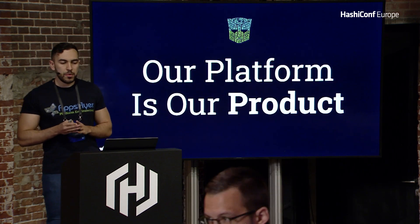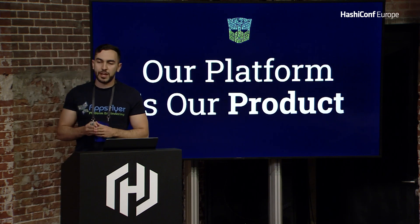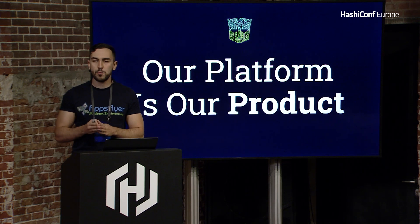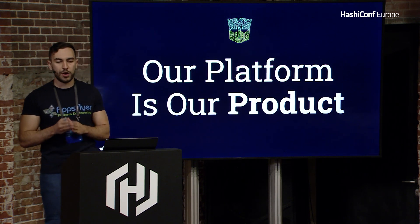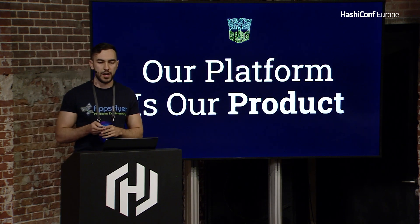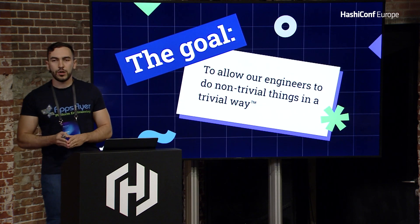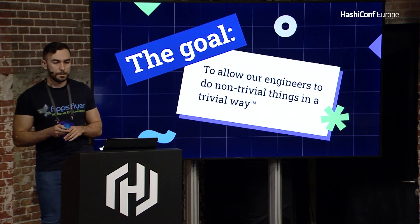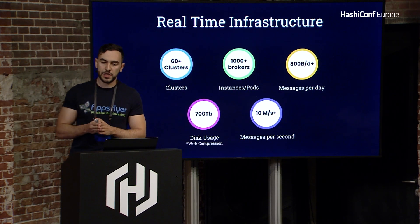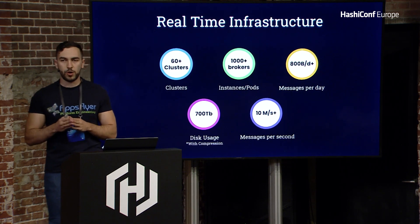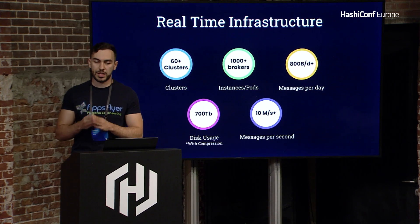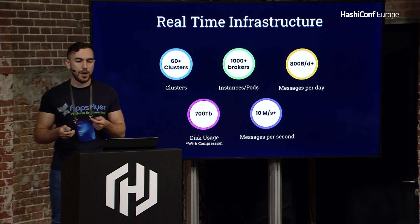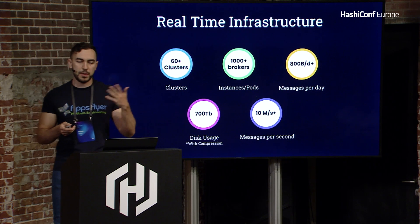Our platform is our product, where we develop the infrastructure side, so we consider the developers as our clients. The platform group is 50 people out of 400 engineers in the R&D department. Our motto is to allow our engineers to do non-trivial things in a trivial way. In the real-time infrastructure team, we provide a real-time platform for building data-intensive applications based on streaming and caching. Our apps include Kafka, AeroSpike, Redis, and Memcached.